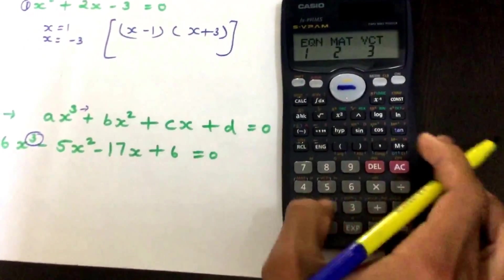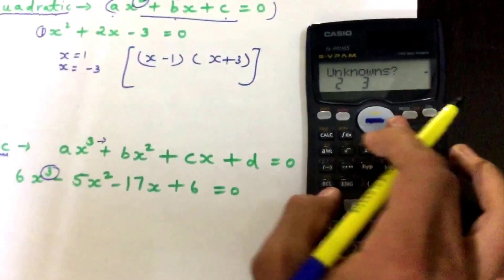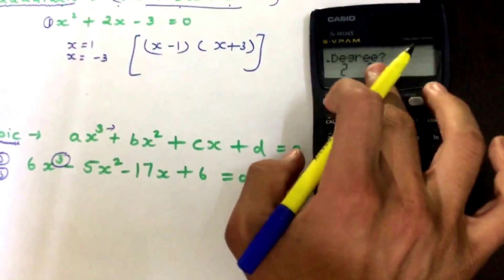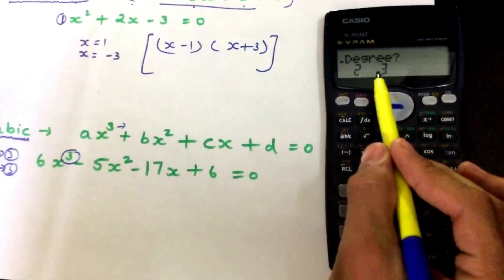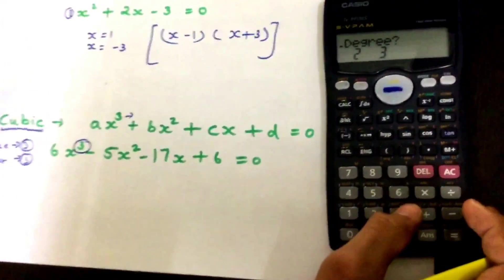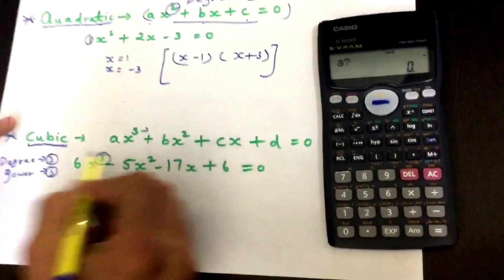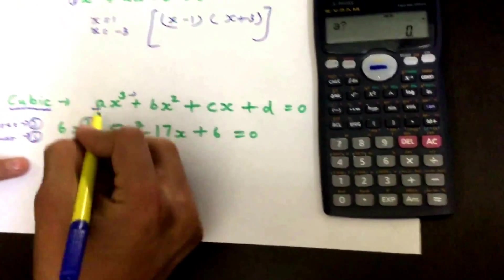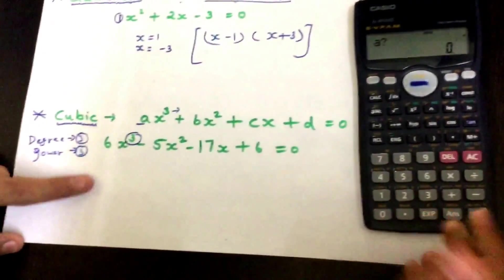Then go to equation, press right, and then go to degree three because here we got degree three in cubic equations. So press three and compare this equation with this and put the coefficients of x³, x², x, and the constant term.